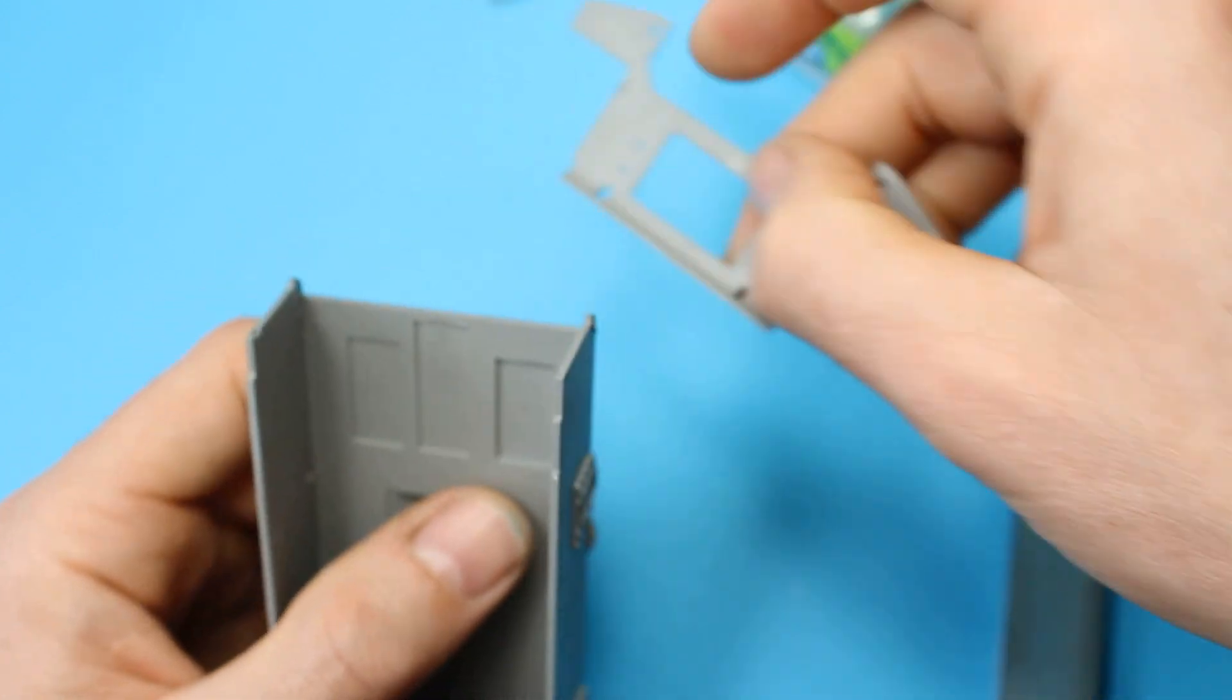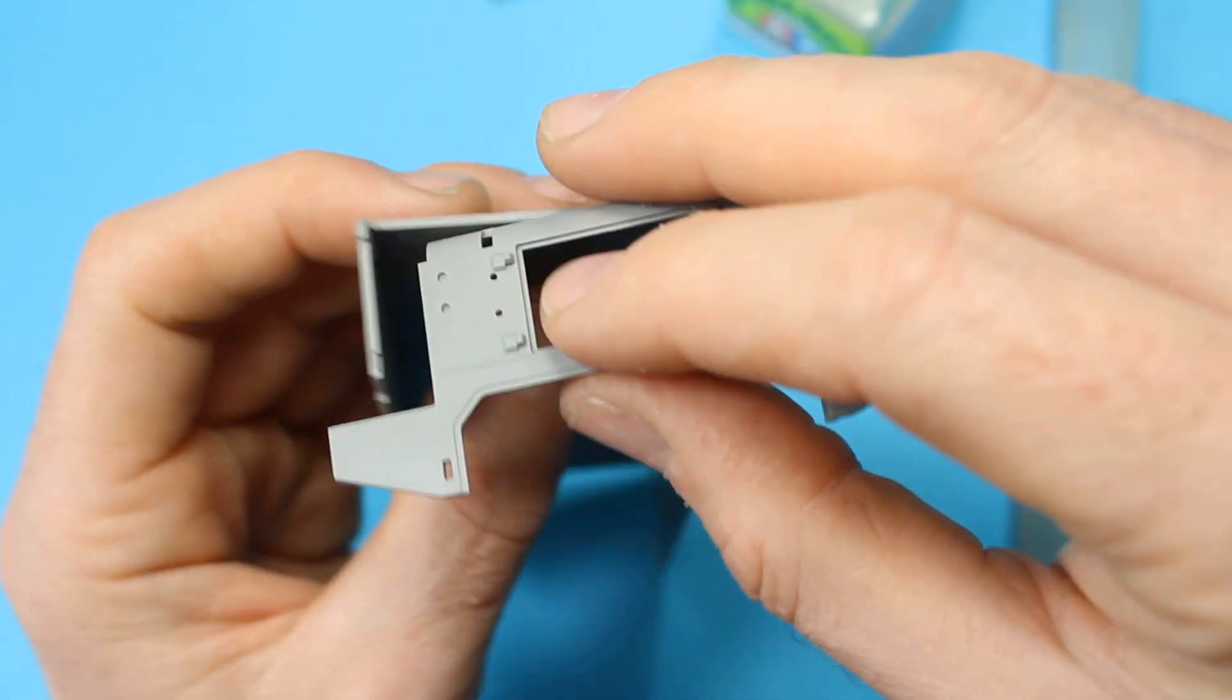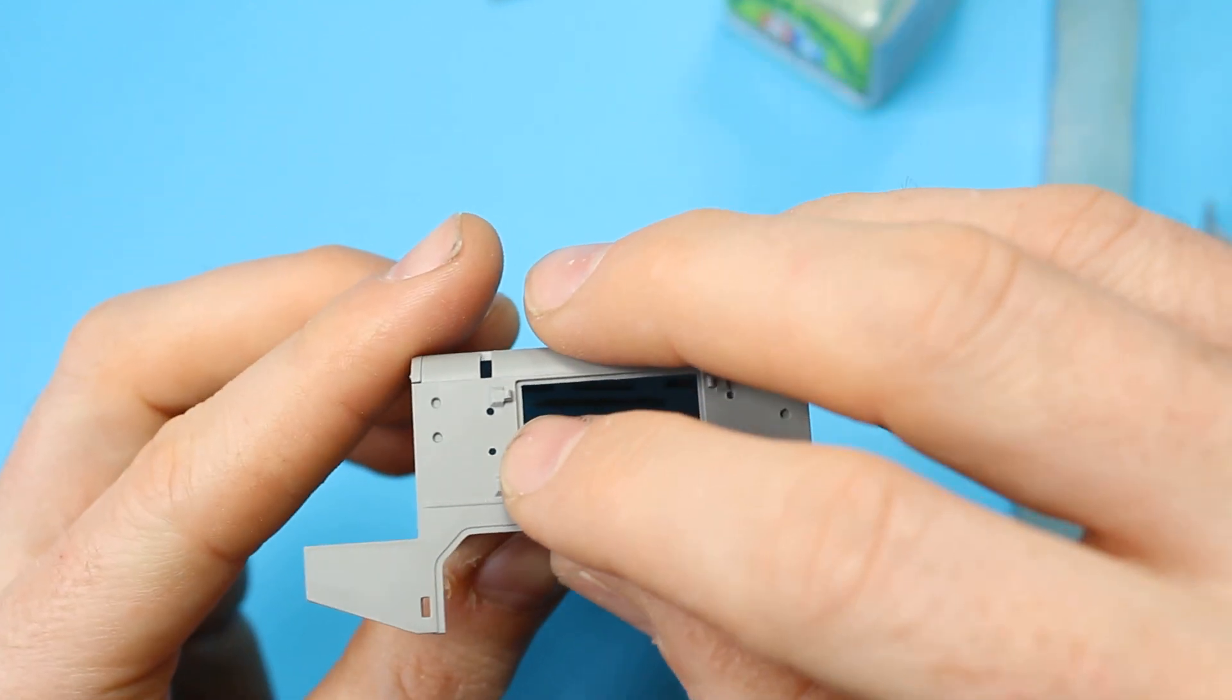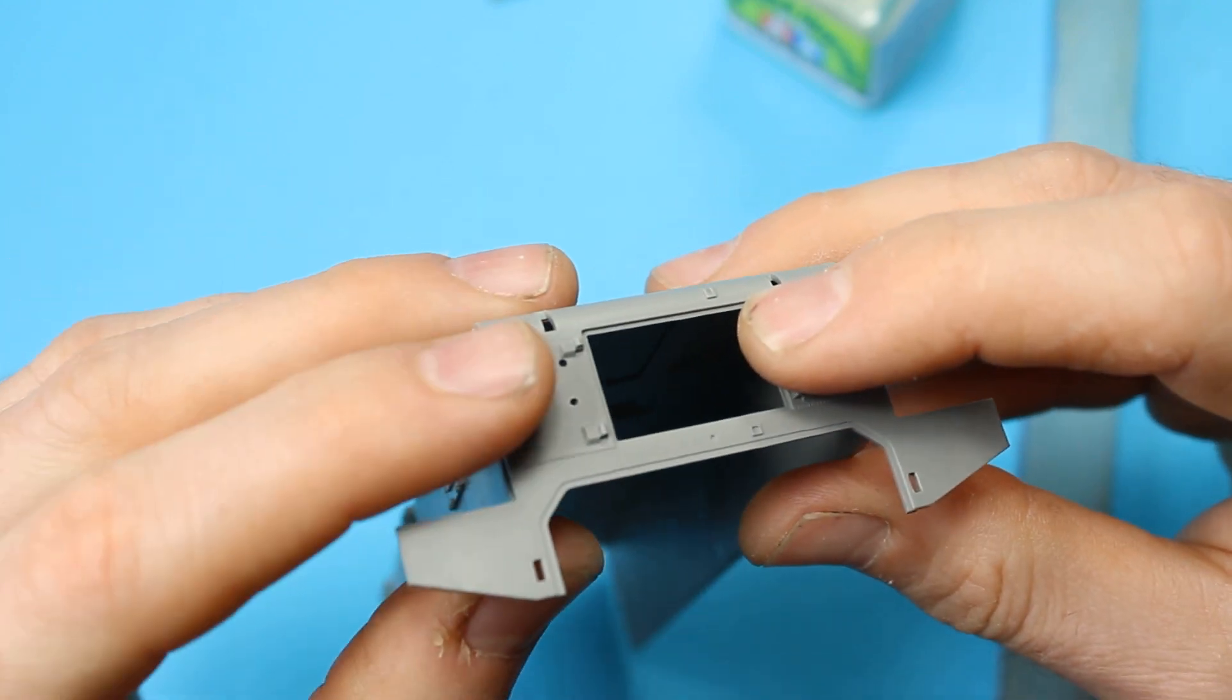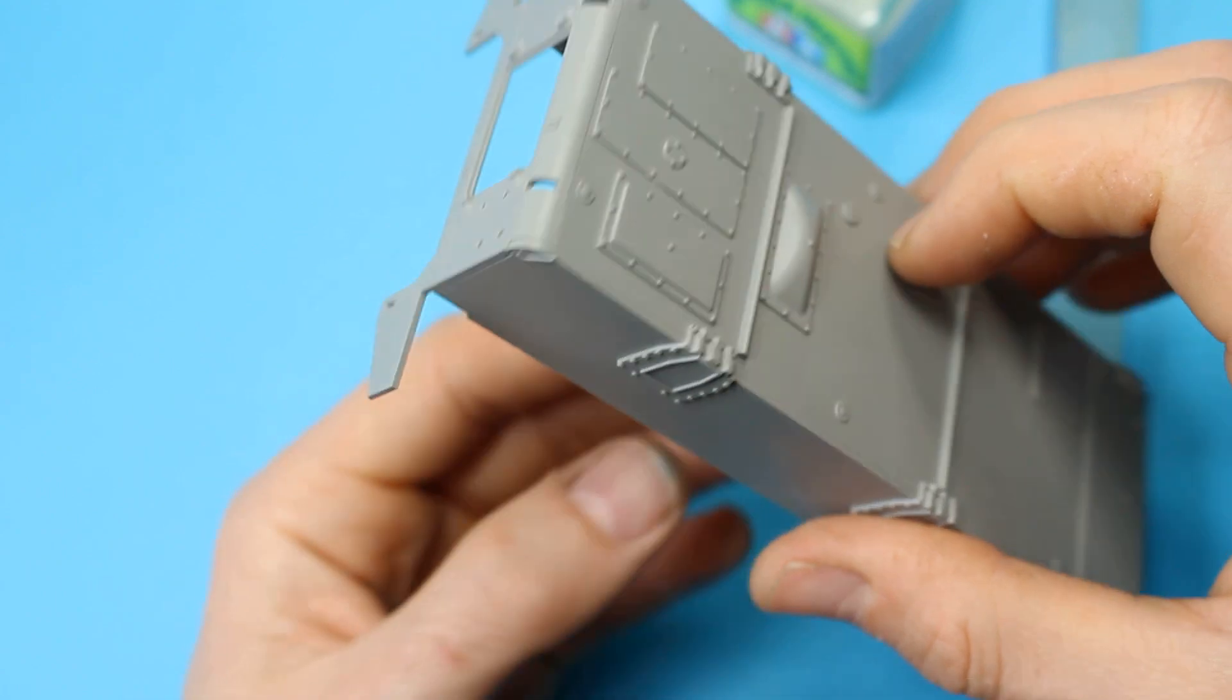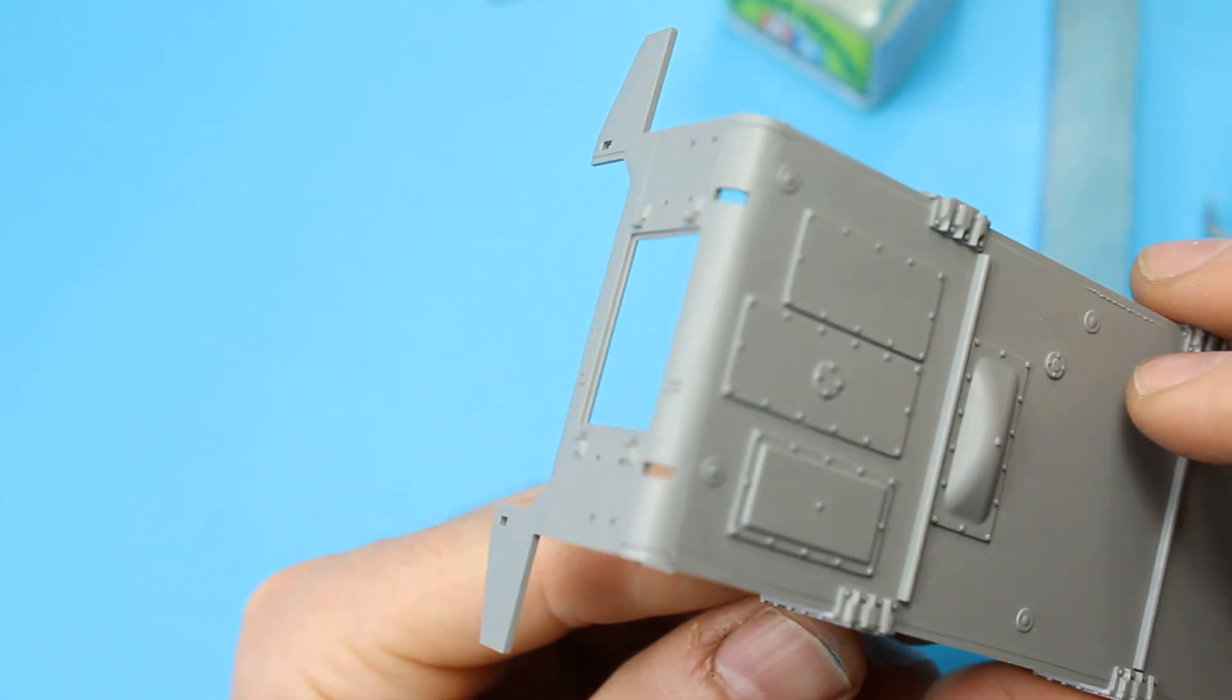You can see the rear section there is just dry fitted. It does slot in. For the most part, this kit is very well engineered and the fit is extremely good. But it's almost over-engineered in a couple of places, I would say. It's trying to do things the way Tamiya does it and not quite having the right finesse, is my opinion.